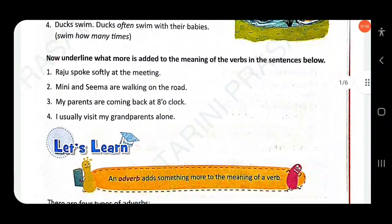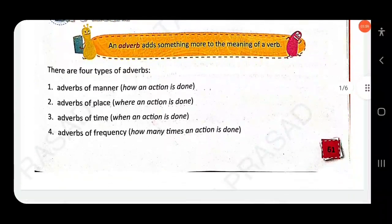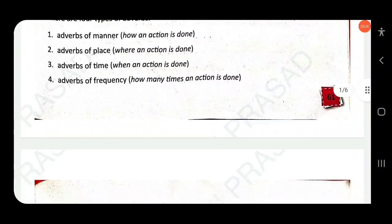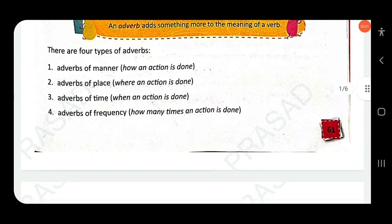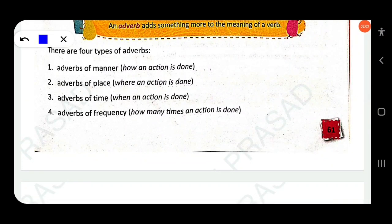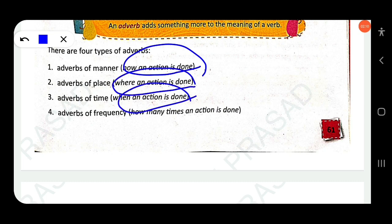Adverb of manner tells us how an action is done. Adverb of place tells us where the action is done. Adverb of time tells us when an action is done. Adverb of frequency tells us how many times an action is done.